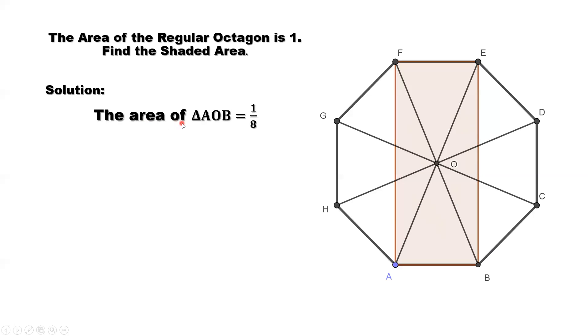The area of the triangle AOB is one of those eight pieces. The area of triangle AOB equals one-eighth, because the total area is one from this given condition.